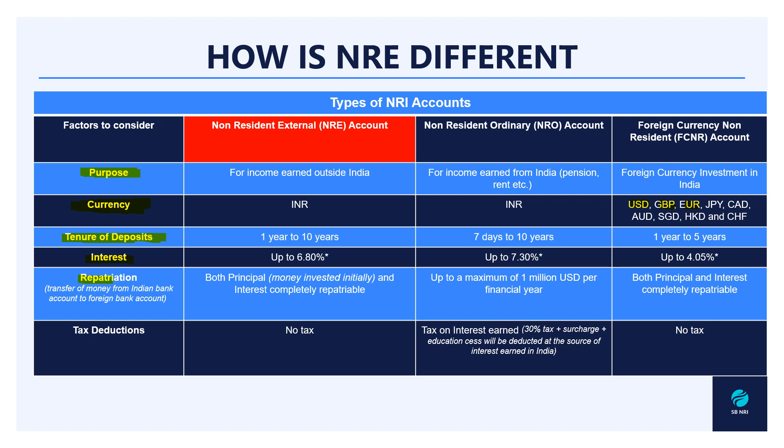Now coming to the next factor: repatriation. The repatriation process is basically the transfer of money from these accounts to your external or foreign bank accounts. In case of NRE and FCNR, both the principal and the interest earned are completely repatriable - you can transfer the entire money and you don't need to pay any taxes on these repatriations. However, for NRO, which is different in this aspect - since the NRO account is used for income generated in India, you are liable to pay taxes to the government and there is a limit of only up to a maximum of 1 million US dollars per financial year that can be repatriated.